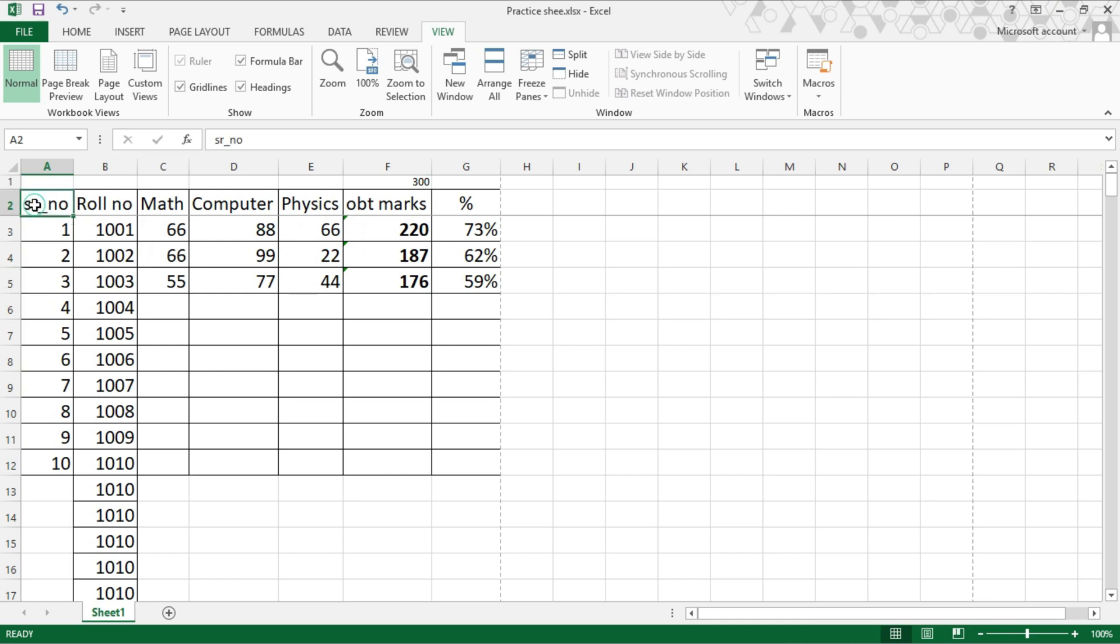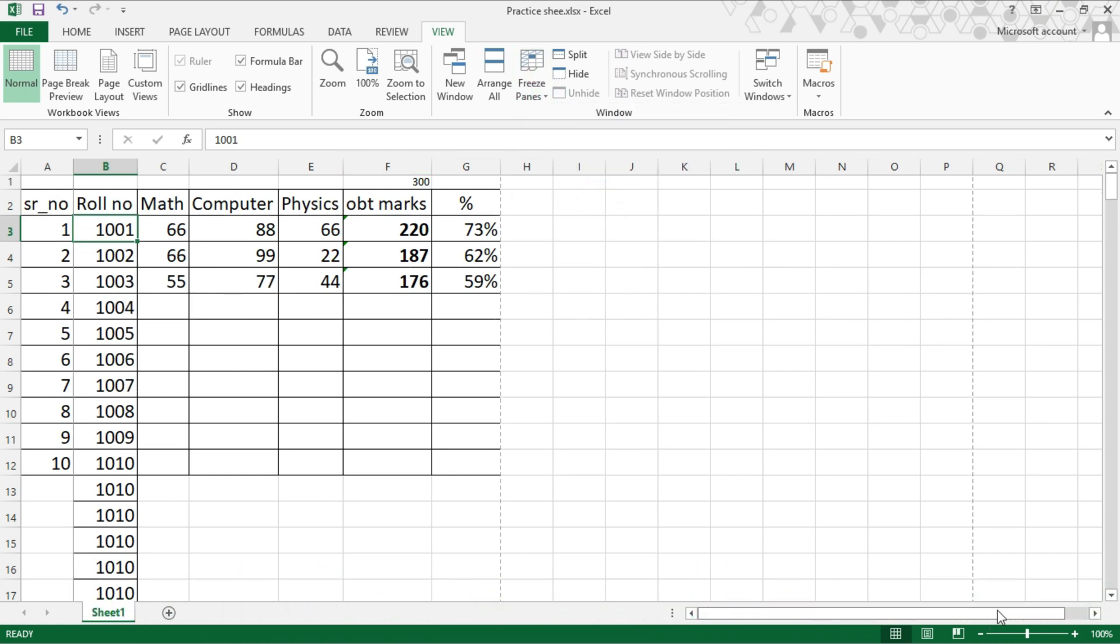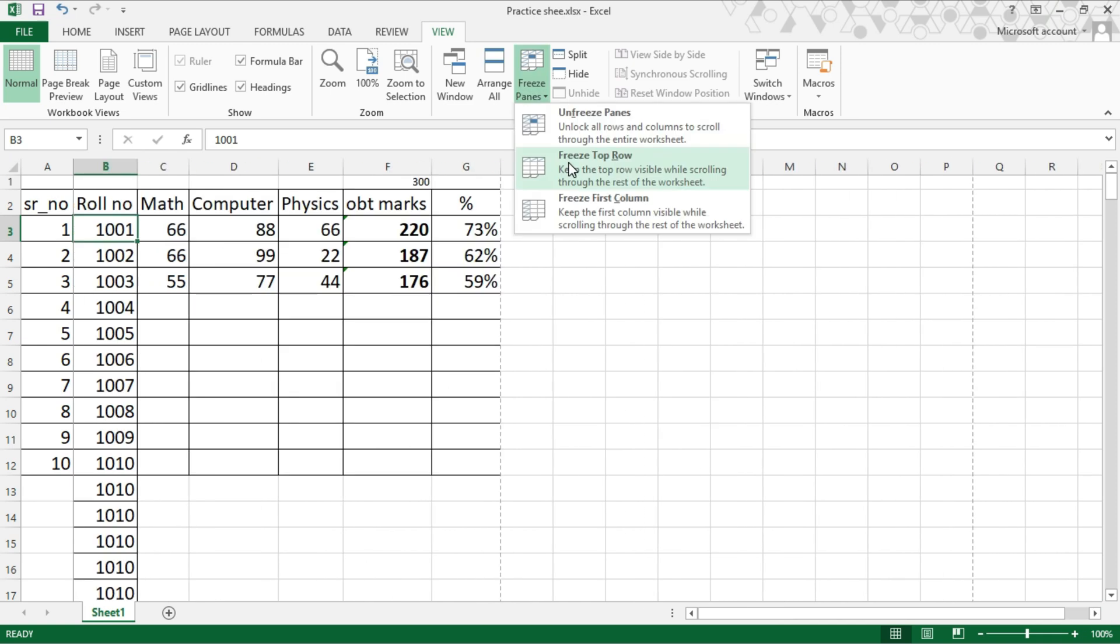The left side disappears, so now we want to freeze this column. Click Freeze First Column. Now the first column is frozen.